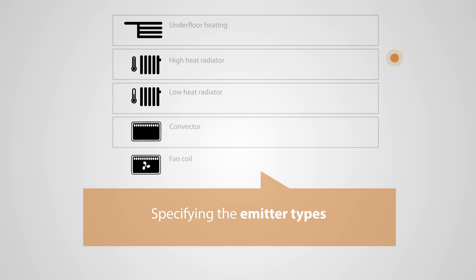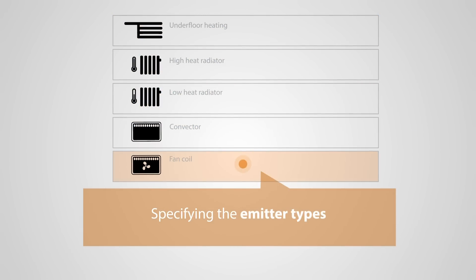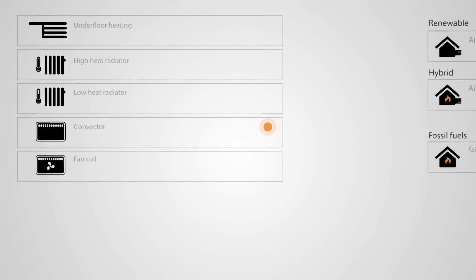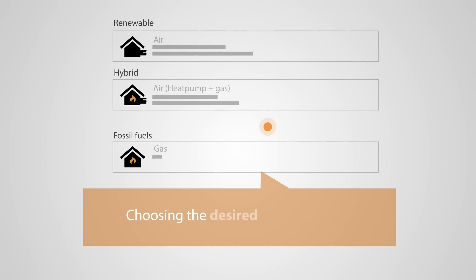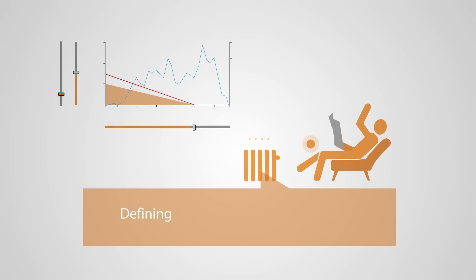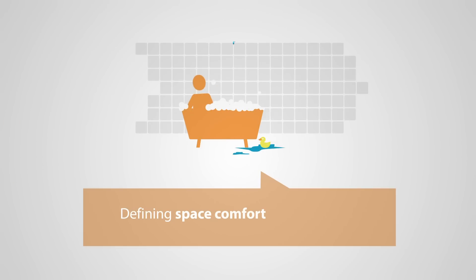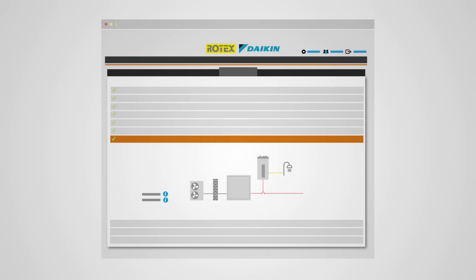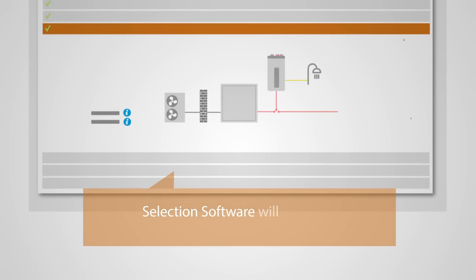Specifying the emitter types — underfloor heating, radiators, convectors or fan coils — narrows down the choice. Choosing the desired energy source: does the customer prefer a renewable, hybrid or fossil fuel source? And defining both the space comfort and domestic hot water needs. Based on these data, the selection software will propose the most clear-cut choice.